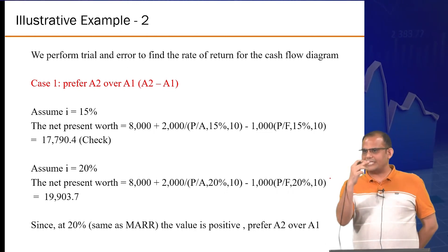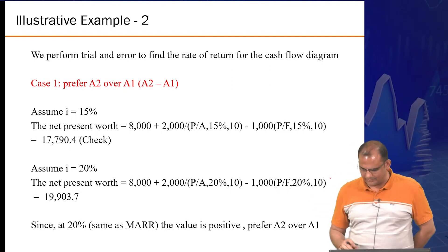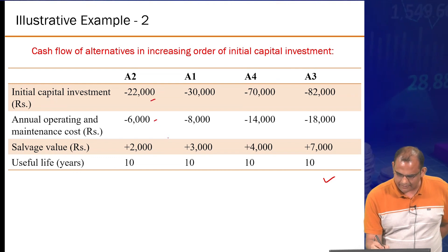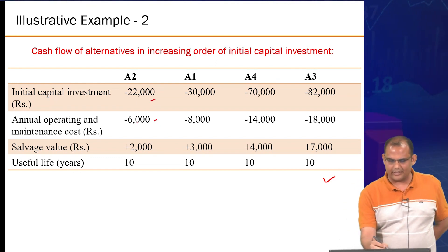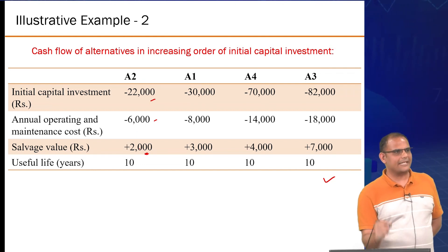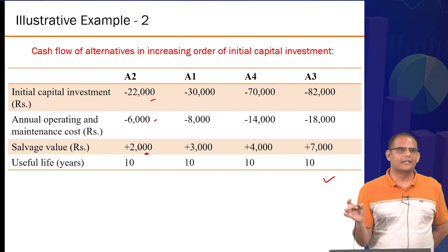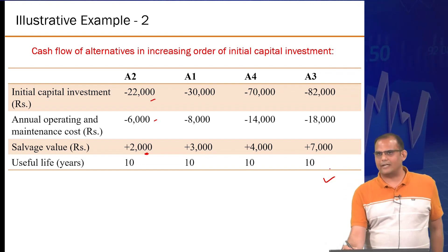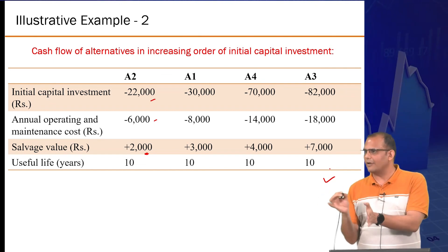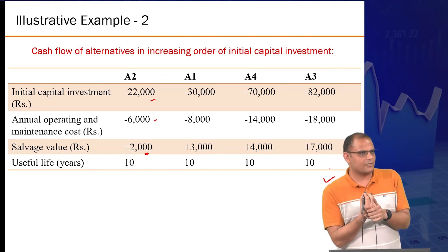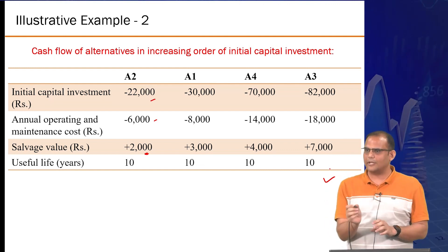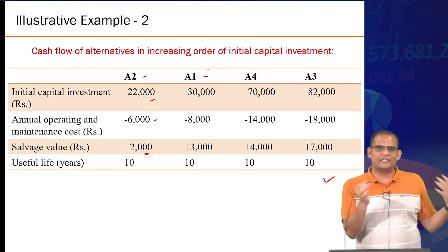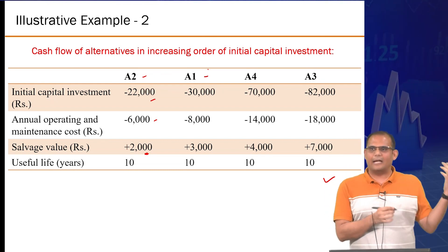You should first check whether each alternative makes individual financial sense, but since all are cost-heavy, that step doesn't apply. So you immediately go to comparison. Now comparing A2 versus A1: you could subtract A1 from A2 or A2 from A1. If you subtract A1 from A2, you won't get a clean series — the net cash flow series may end up on both the positive and negative side. Make your life convenient — don't get stuck on the order the terminology gives you. Ultimately the aim is to compare all alternatives.